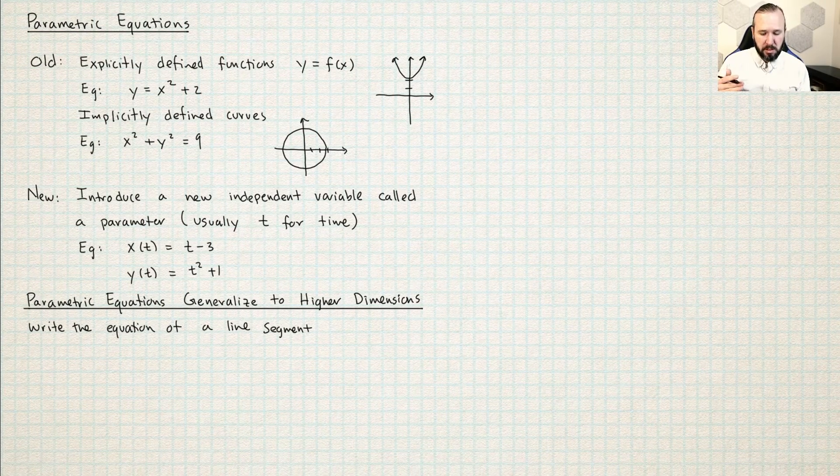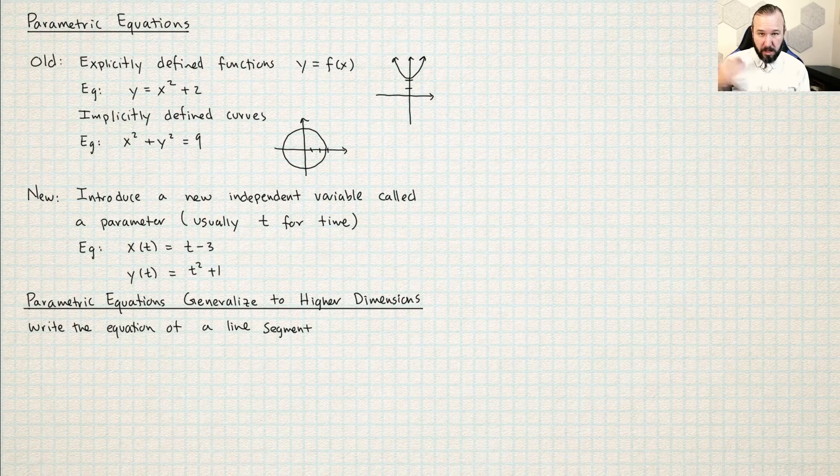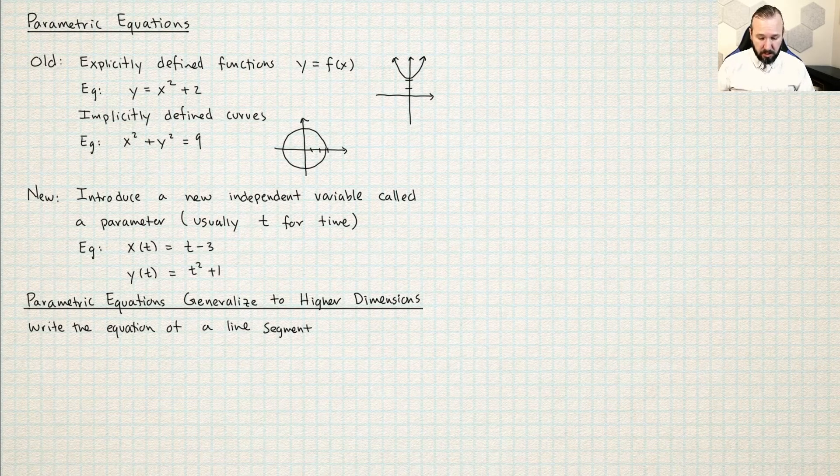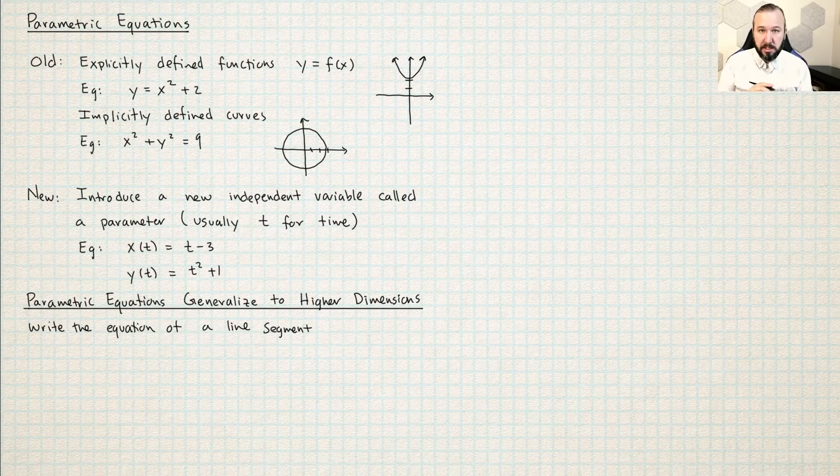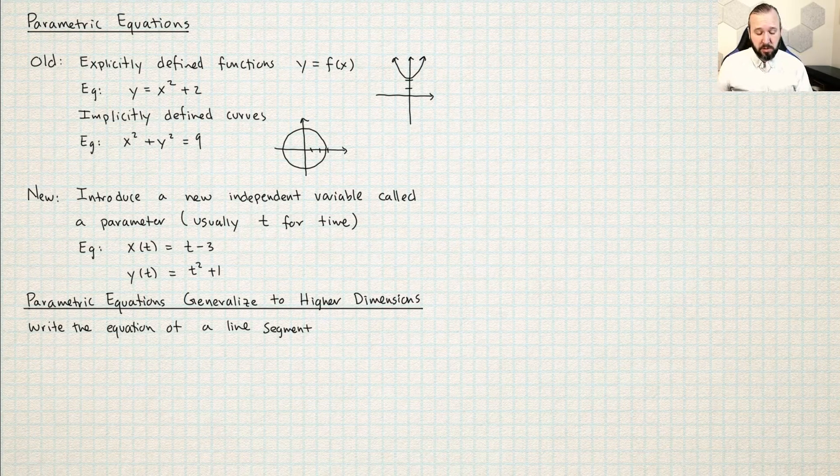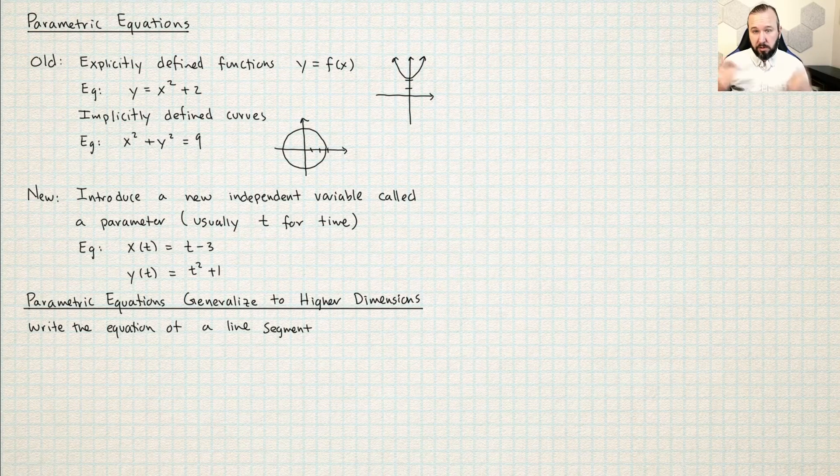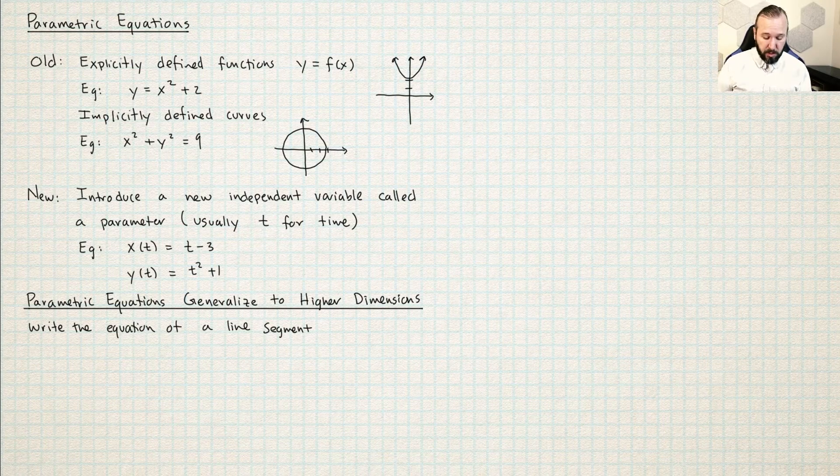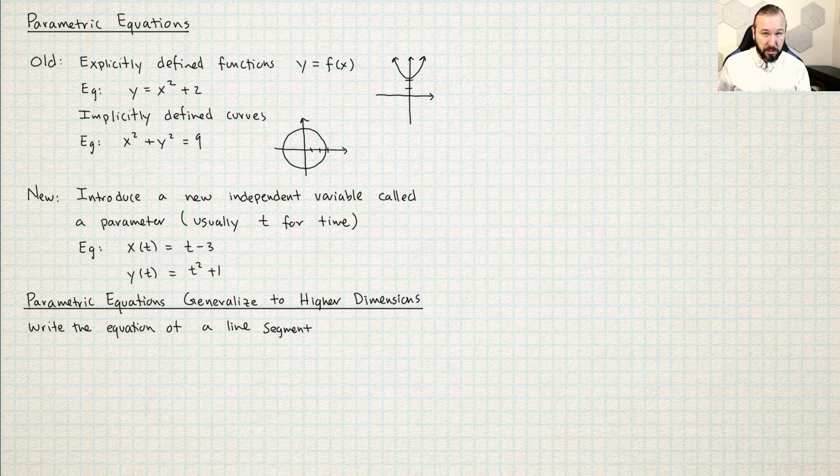I like parametric equations because it doesn't really matter what the dimension is. If you're doing math in 2D or 3D, parametric equations, it's just kind of all the same. I'm going to do an example here where I write the equation of a line segment, and I'm going to do it in three dimensions. And we haven't studied anything about 3D space before. But I think you'll see if we use parametric equations, then it's really just no big deal at all.